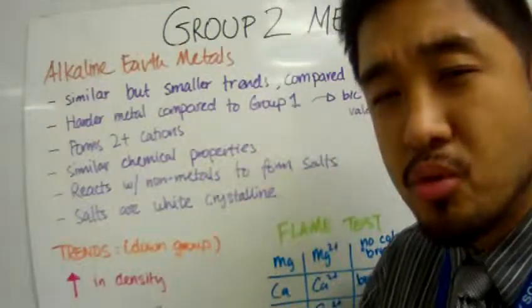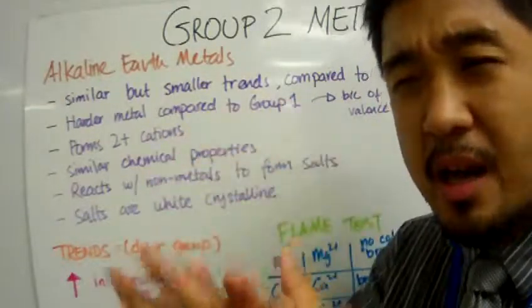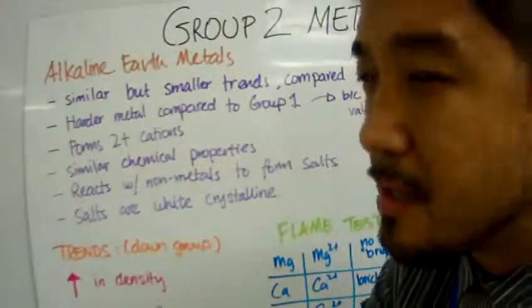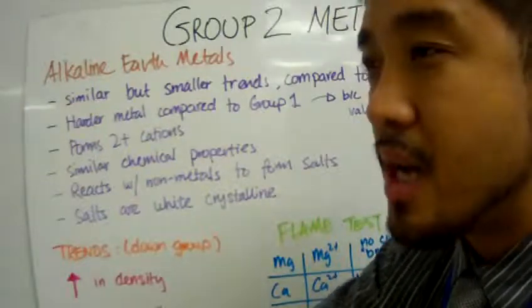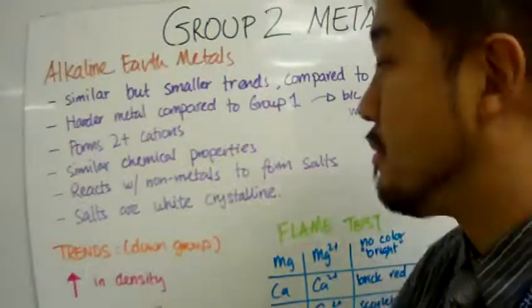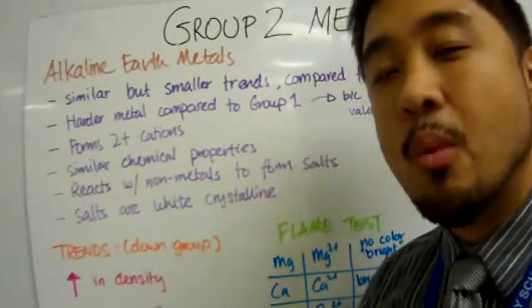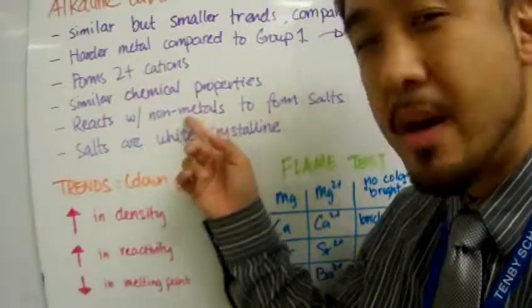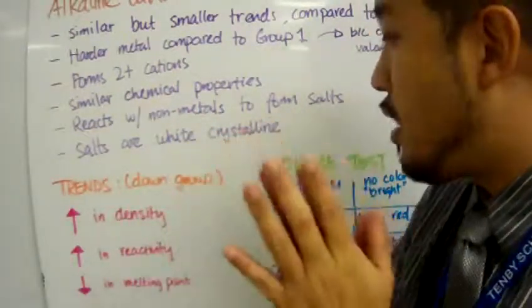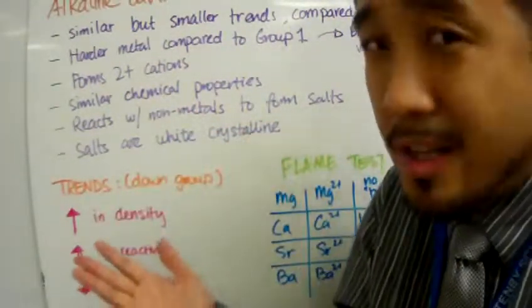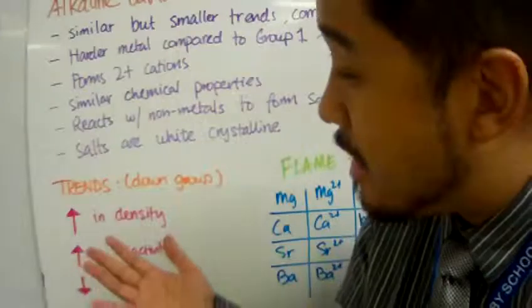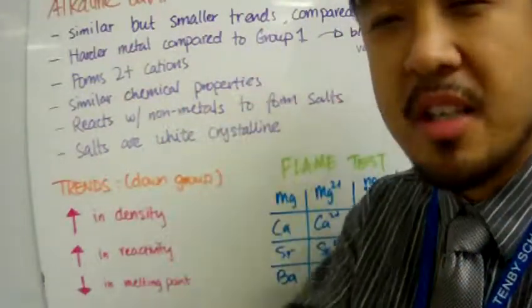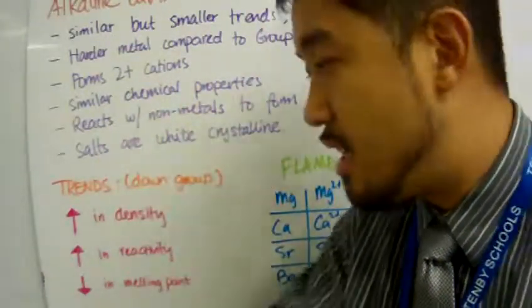The entire group 2 will also have very similar chemical properties, and this is where the buck ends. When alkaline earth metals react with non-metals, they form salts — nothing new there. And these salts are crystalline white solids.